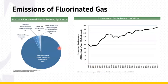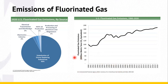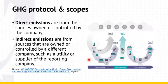For fluorinated gases emissions, overall fluorinated gases emissions in the US have increased by about 90% between 1990 and 2020. These gases are used in refrigeration in the US, for example in air conditioning systems in both vehicles and buildings.